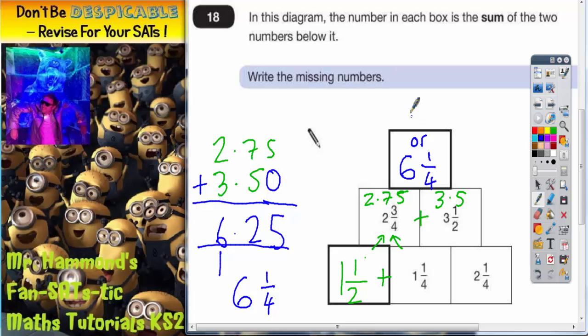But they would also accept 6.25 because it doesn't specify in the question whether or not you've got to give your answers as a decimal or as a fraction. So either answer is acceptable because they mean the same thing.